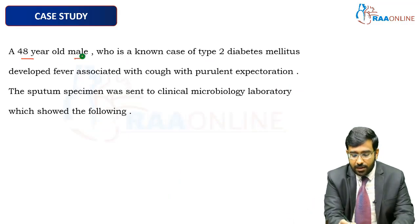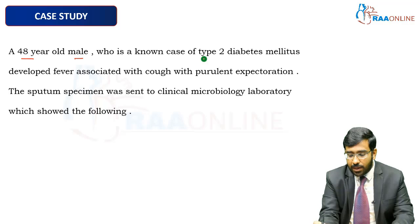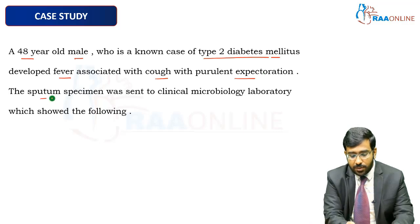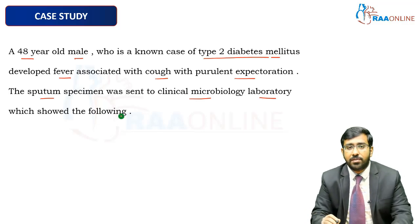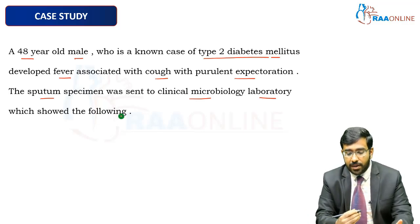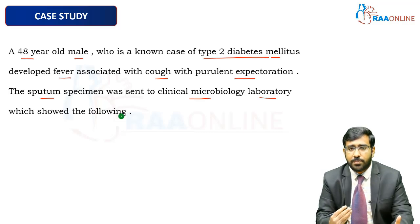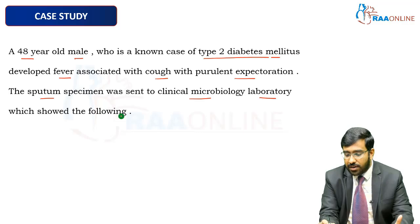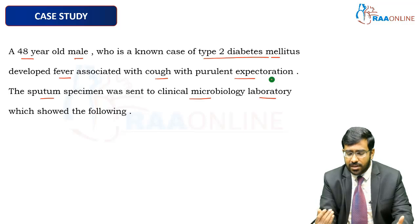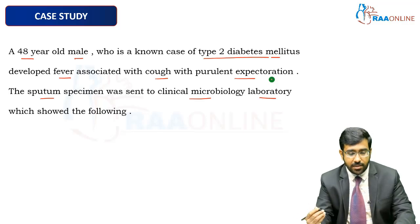We have a 48-year-old male who is a known case of uncontrolled type 2 diabetes mellitus — which is a predisposing factor and risk factor for various infections. He developed fever associated with cough and purulent expectoration, suggesting a lower respiratory tract infection. The sputum specimen was sent to the clinical microbiology lab, which showed the following findings.